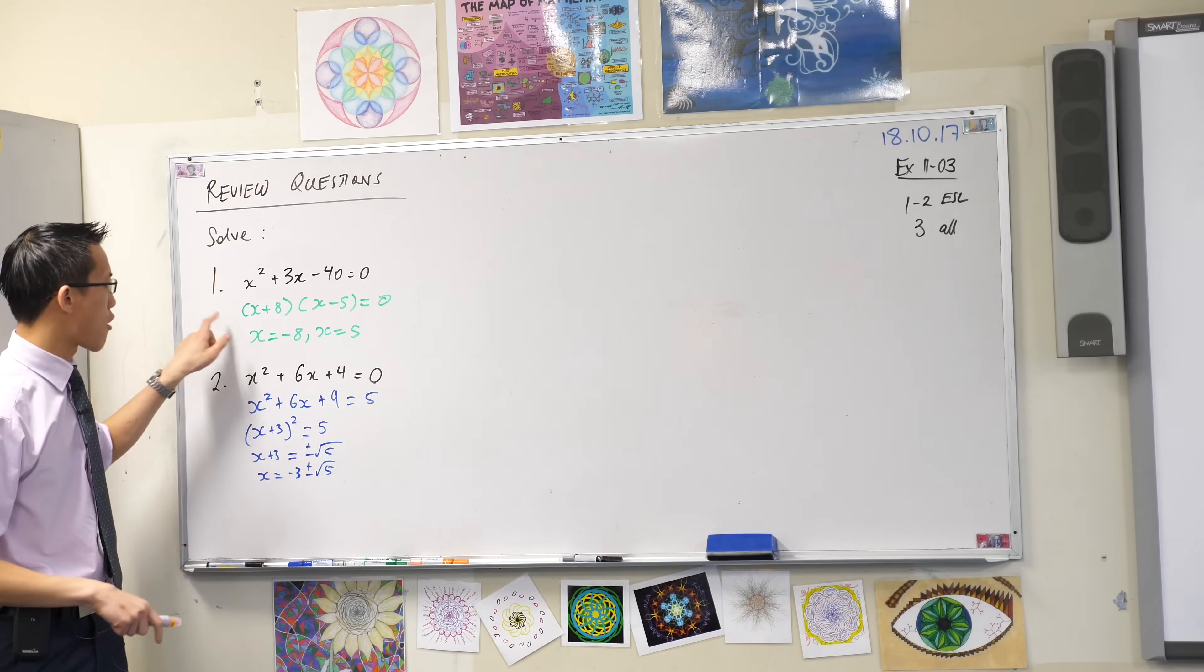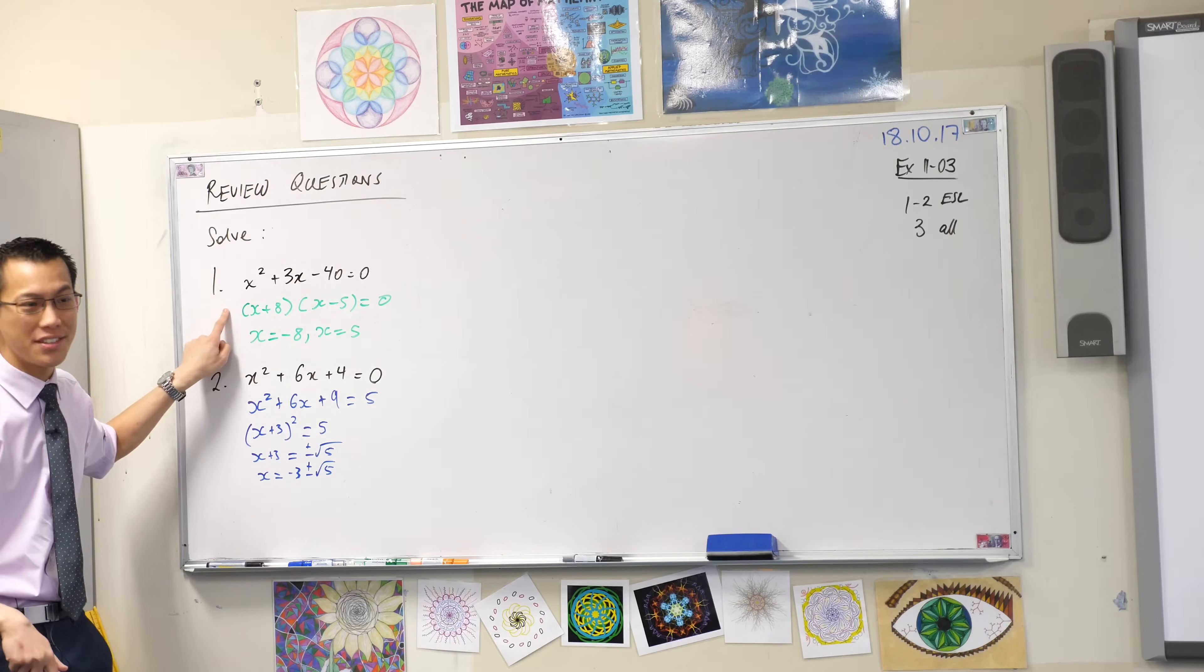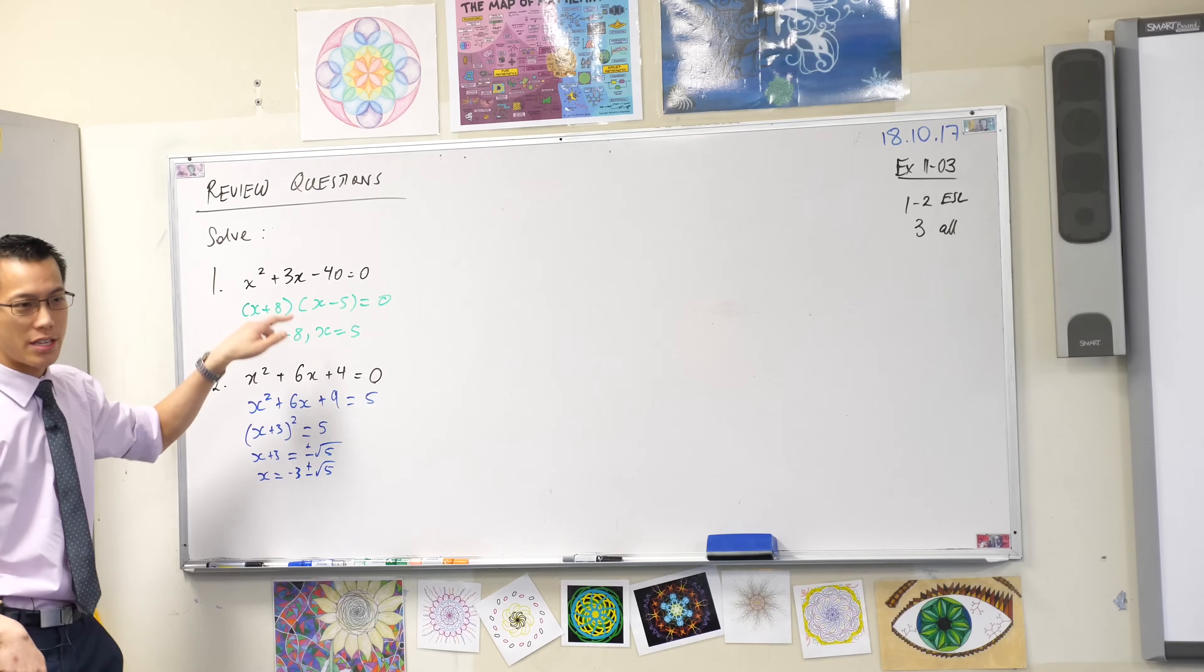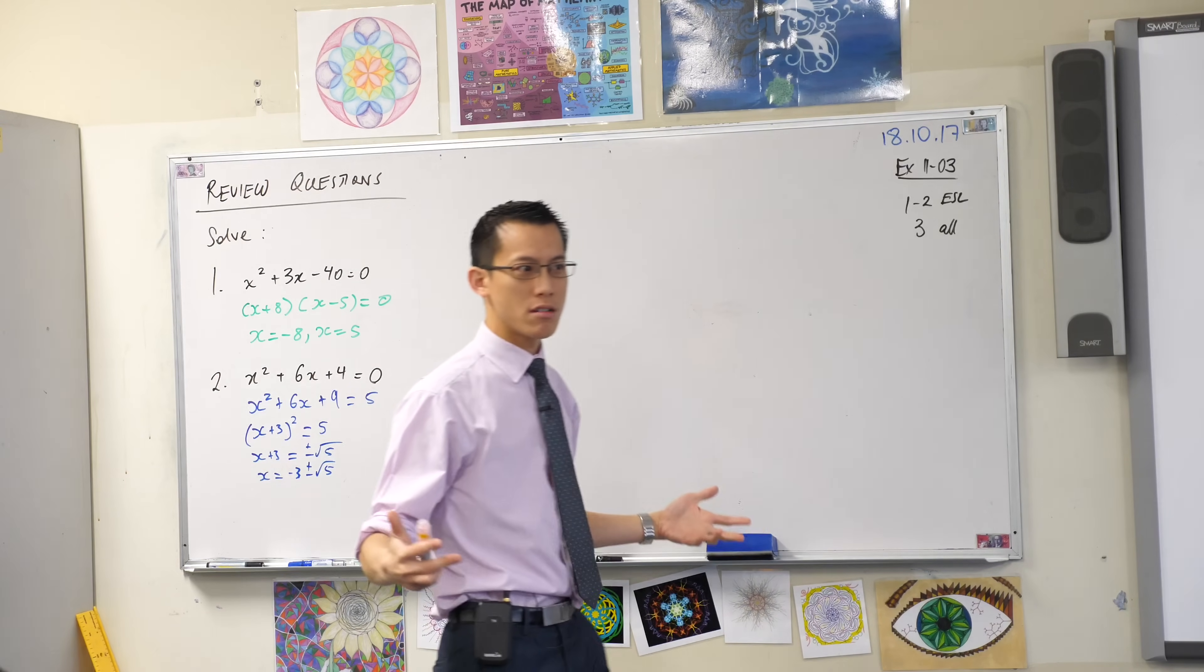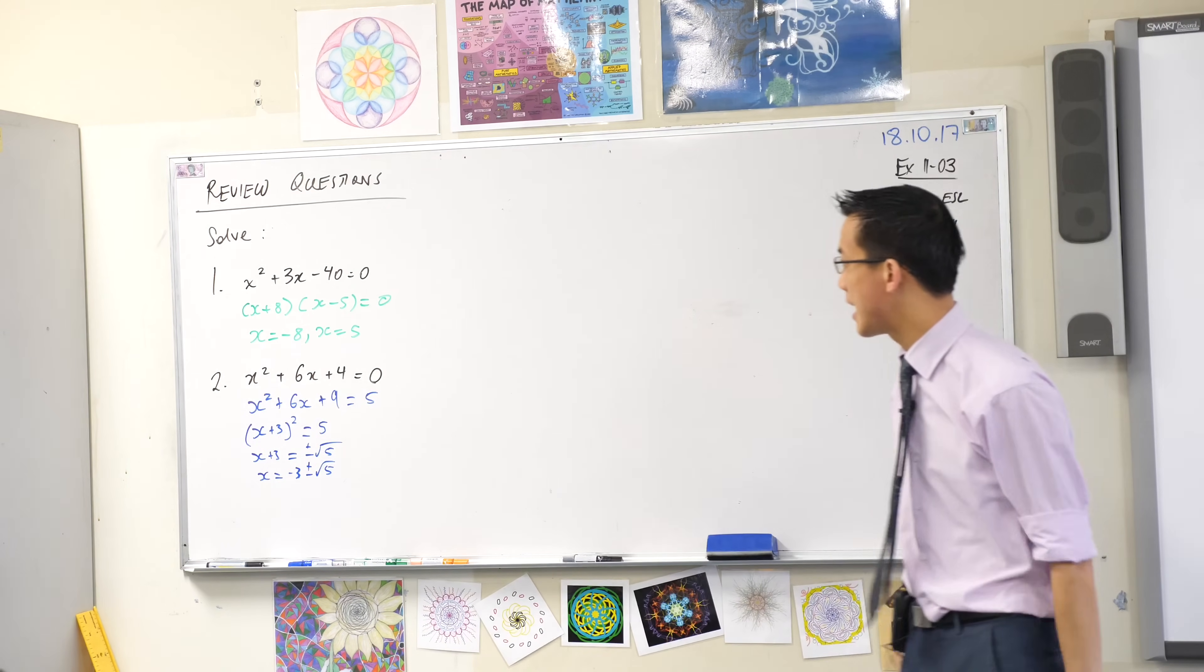Let's have a look here. Brian's provided us with a factorization for this top question: x plus 8, x minus 5. Do you agree? Looks good to me, fantastic.